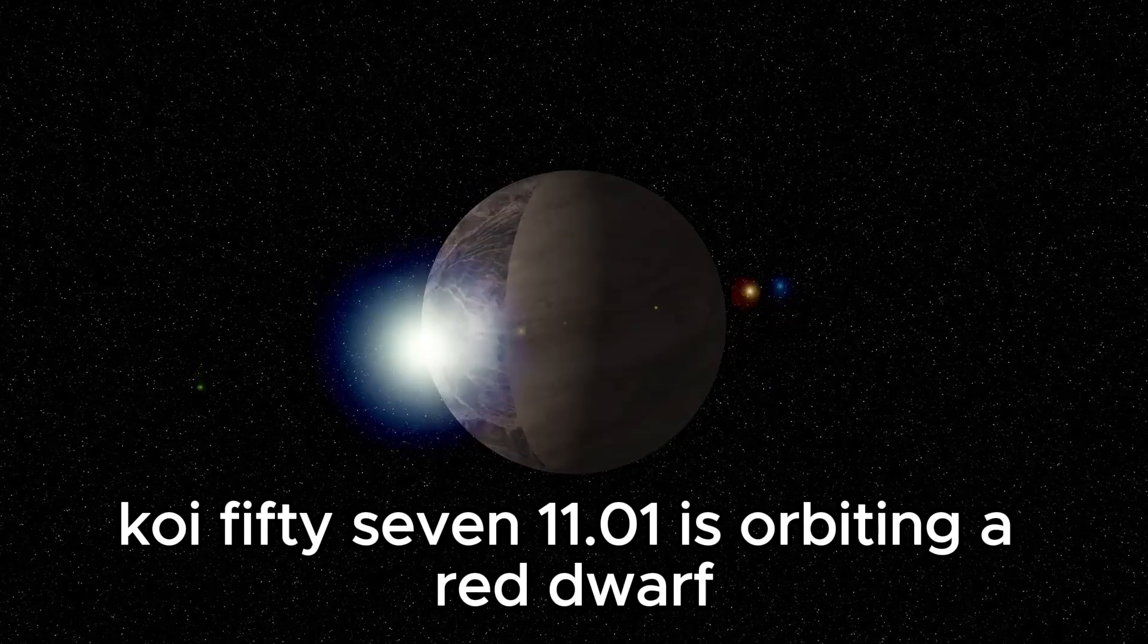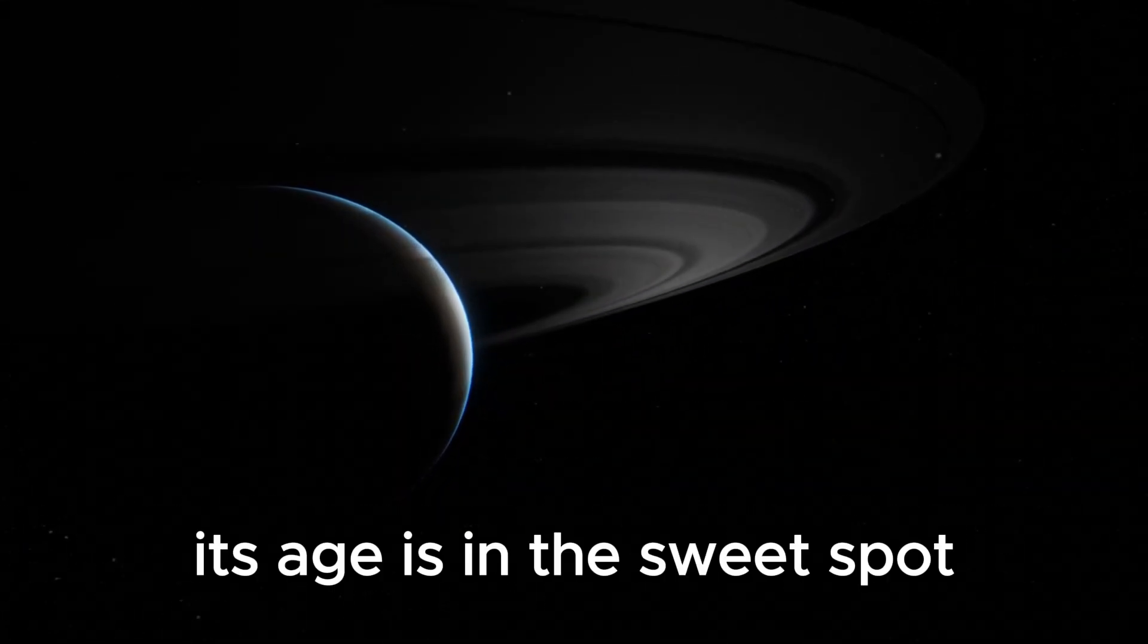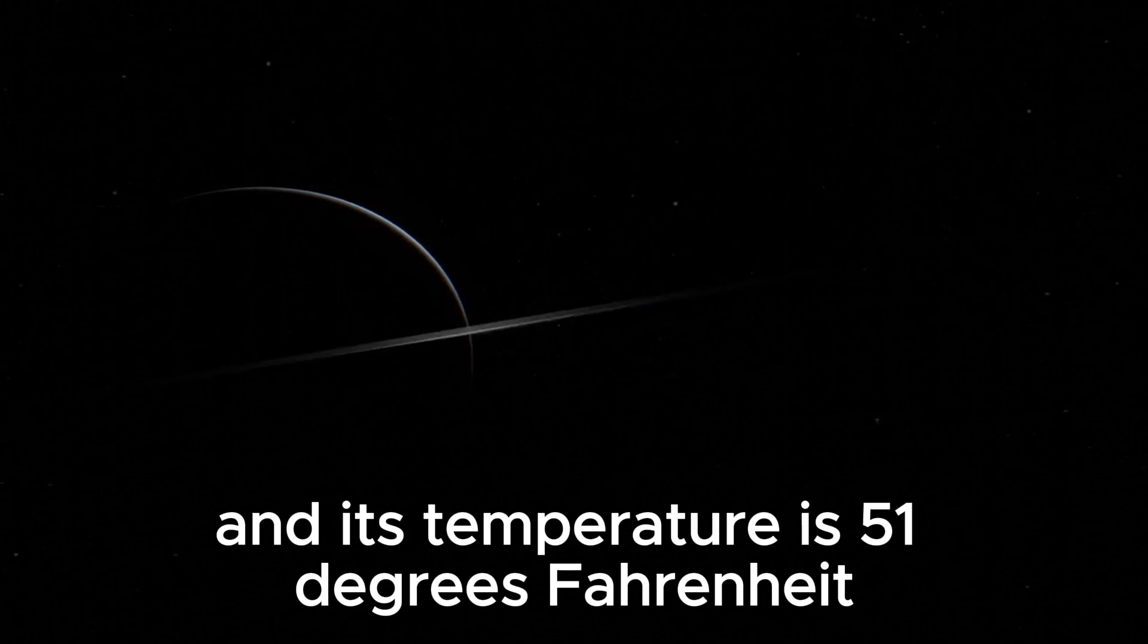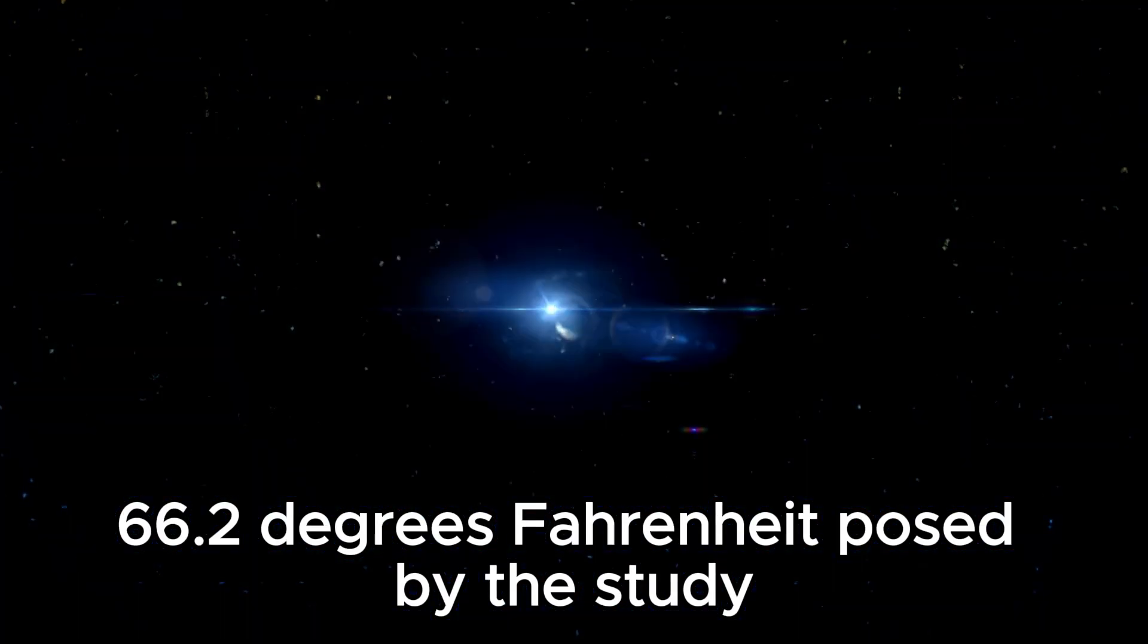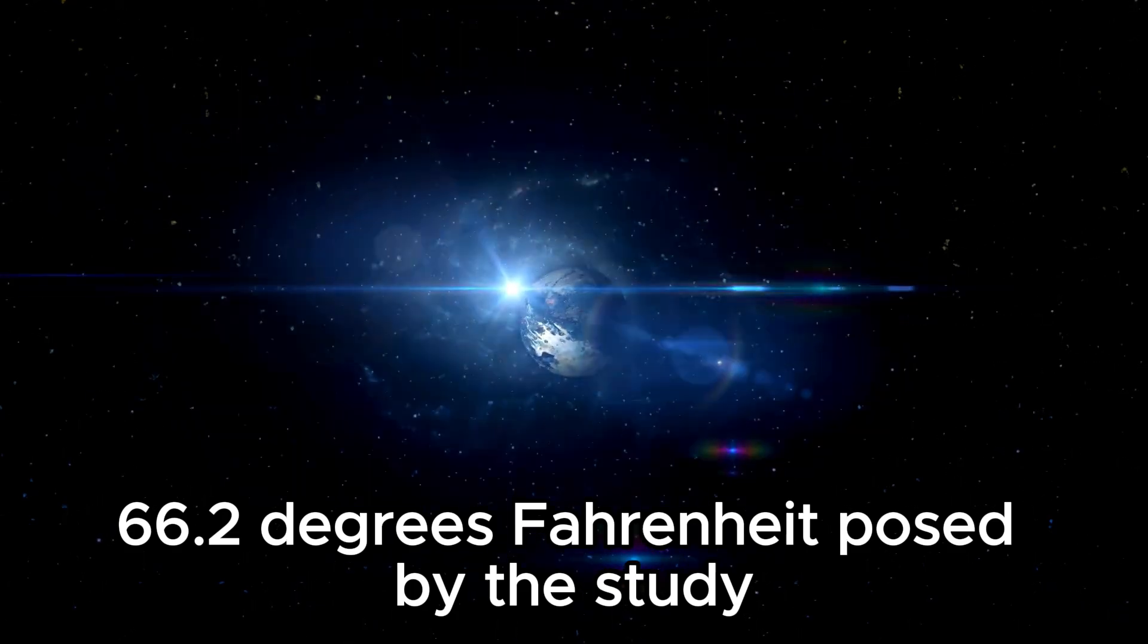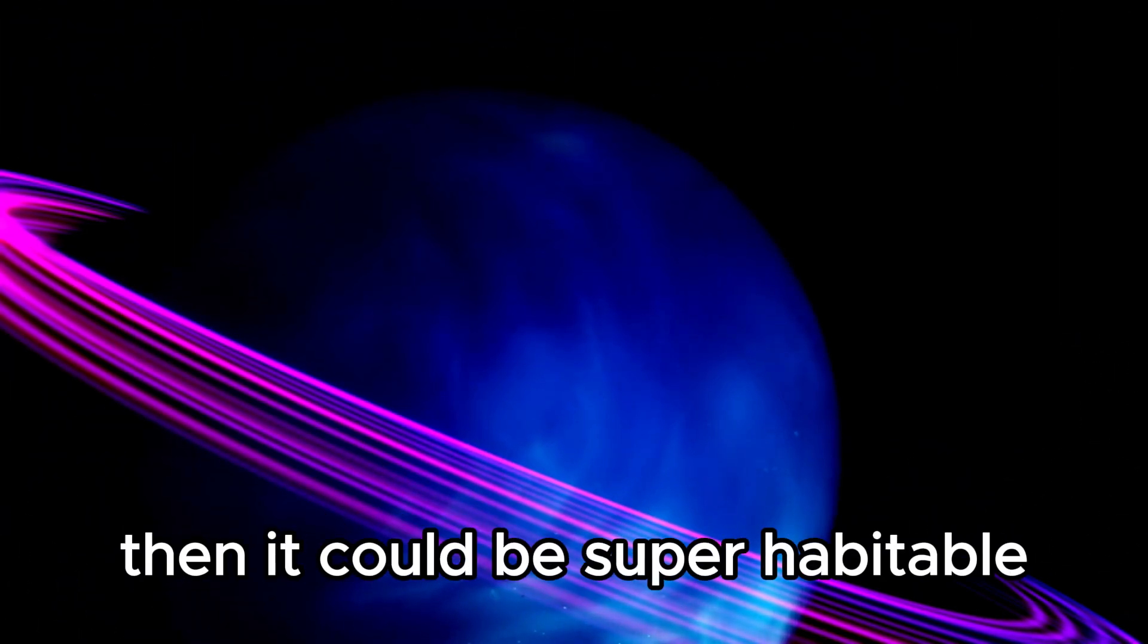KOI 5711.01 is orbiting a red dwarf. Its age is in the sweet spot, and its temperature is 51 degrees Fahrenheit. While not the ideal 66.2 degrees Fahrenheit posed by the study, if its greenhouse effect is stronger than that of Earth's, then it could be superhabitable.